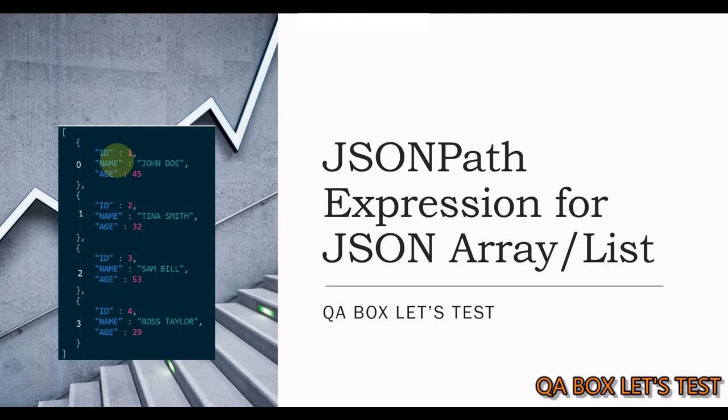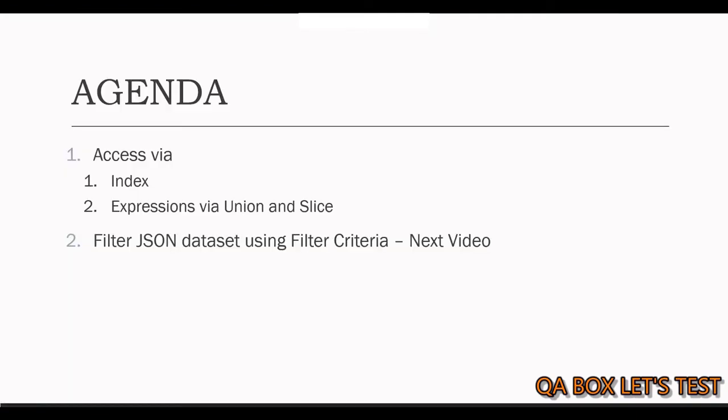In a JSON array, values must be of type string, number, object, array, boolean, or null. The agenda of this video covers how to access JSON array nodes via: number 1, index, and number 2, union and slice expressions.